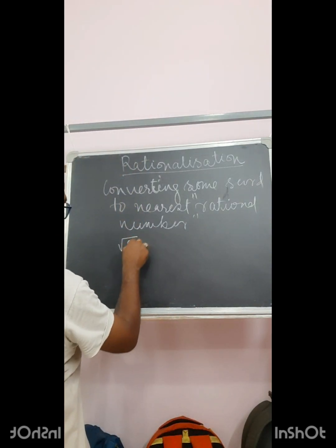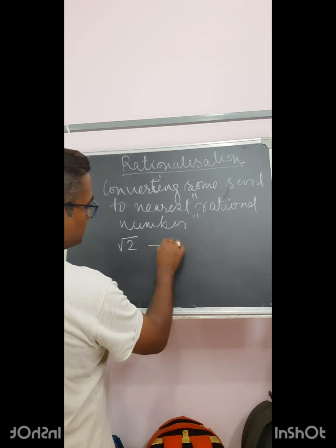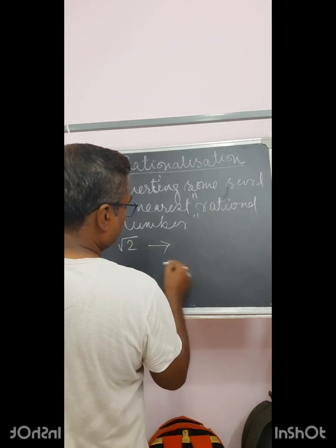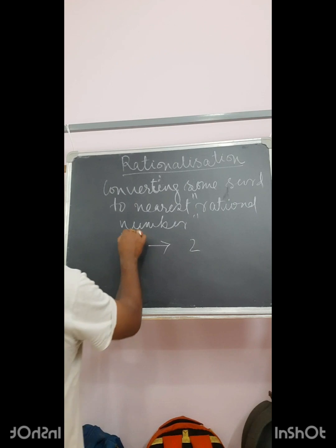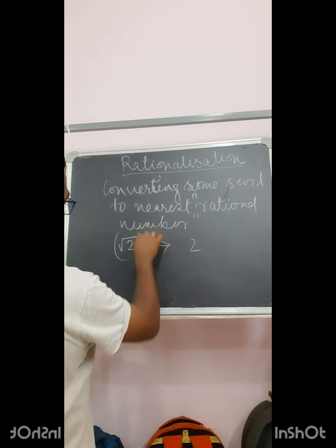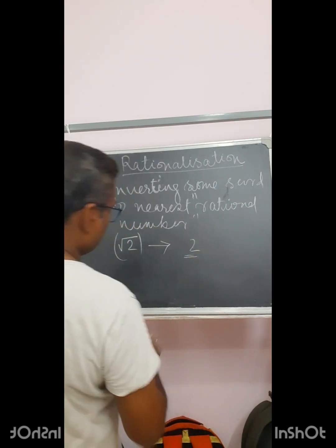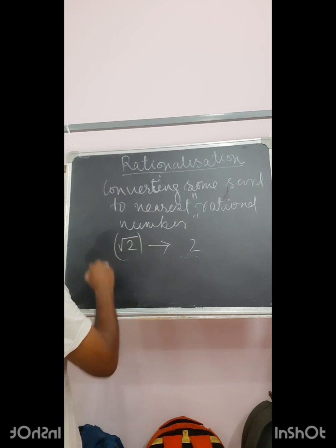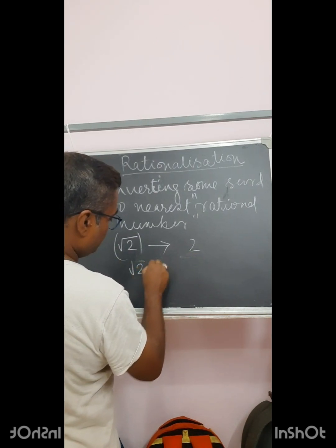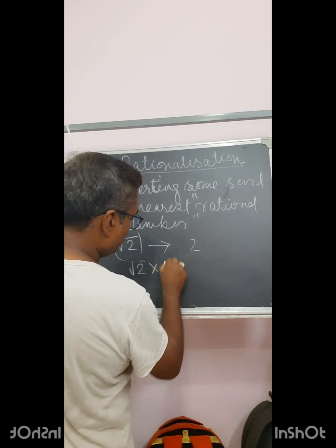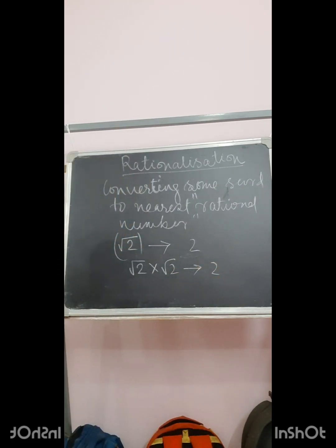For example, if I take the simplest one, root 2 — the nearest rational number for root 2 is 2. So that means I have to multiply something to this, to bring it to 2. It could be root 2 into root 2 itself, which will give you 2.